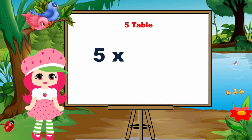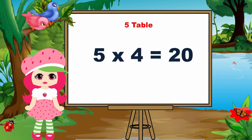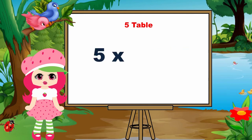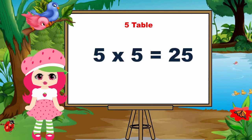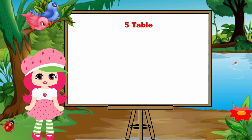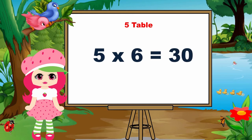Five fours are twenty. Five fives are twenty-five. Five sixes are thirty.